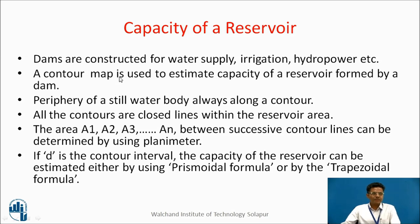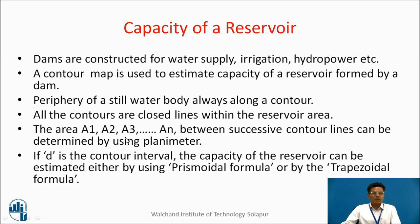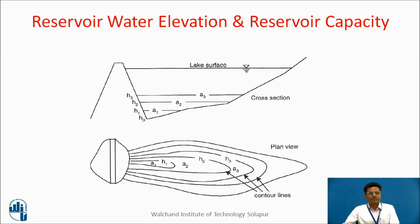Capacity of reservoirs: dams are constructed for water supply, irrigation, and hydropower. A contour map is used to estimate capacity of a reservoir formed by a dam. The periphery of a still water body always follows a contour, and all contours are closed lines within the reservoir area. If we find the areas enclosed by contours at levels a1, a2, a3, and an, spaced vertically at a contour interval of d meters, it is possible to estimate reservoir capacity by adopting certain formulae.